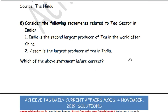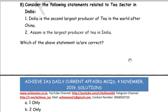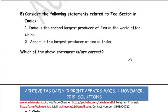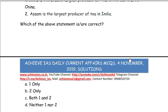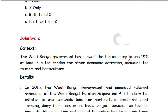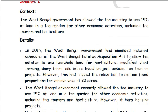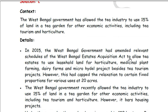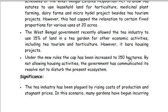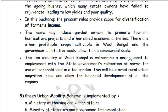Next, consider the following statements related to the tea sector in India. First, India is the second largest producer of tea in the world after China. Second, Assam is the largest producer of tea in India. Both statements are correct — answer is C. The West Bengal government recently allowed the tea industry to use 15% of land in a tea garden for other economic activities including tea tourism and horticulture. That is why this question has been framed.